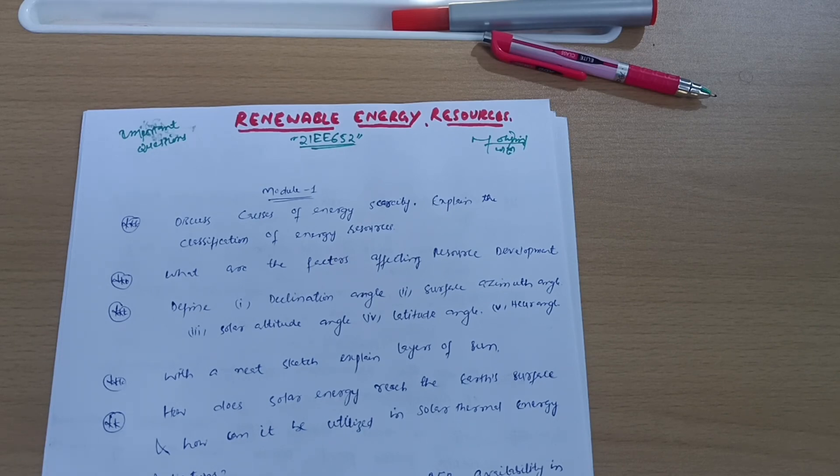These are some super important questions which should be at your utmost priority. This is a combination of diagrammatic portions and theoretical portions. While writing the examination and your answer booklet, try to fill the first 10 pages with diagrammatic questions.